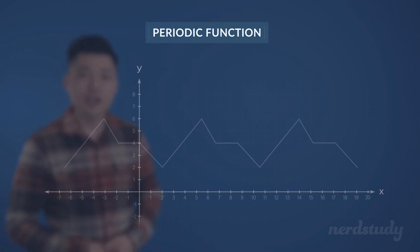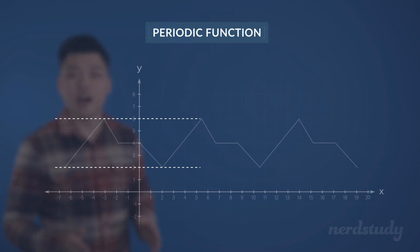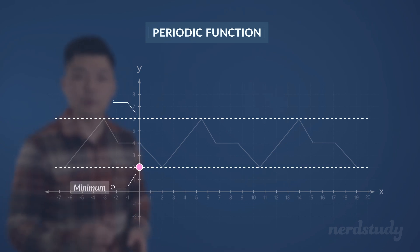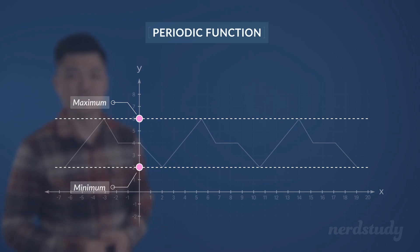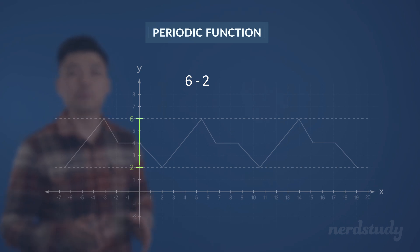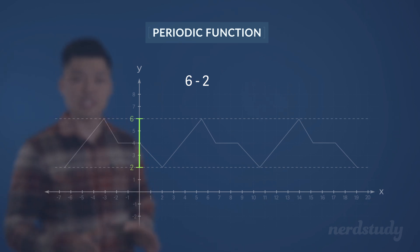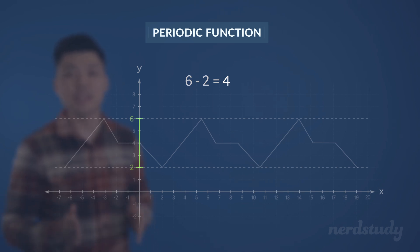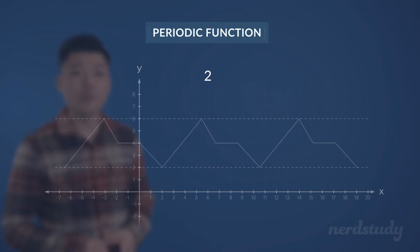Now I want us to take a look at the height between the minimum and maximum value of the periodic function. If we take these values and subtract them from each other, we would get the total height of this periodic function — in this case, we would get 4. Now, if we take this height and divide it by 2 to get 2, we would get what is called the amplitude.